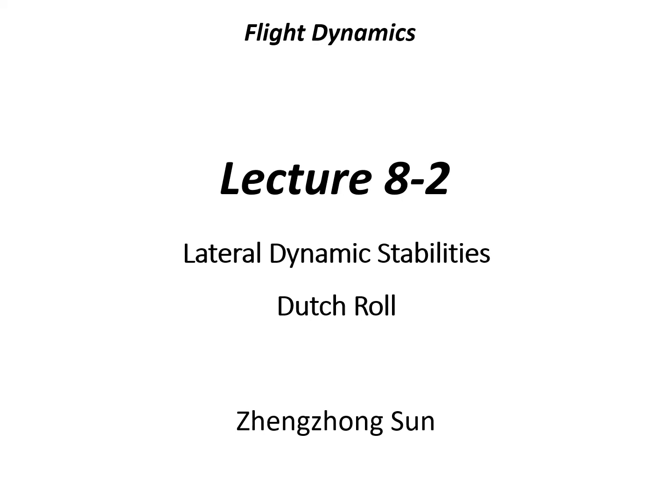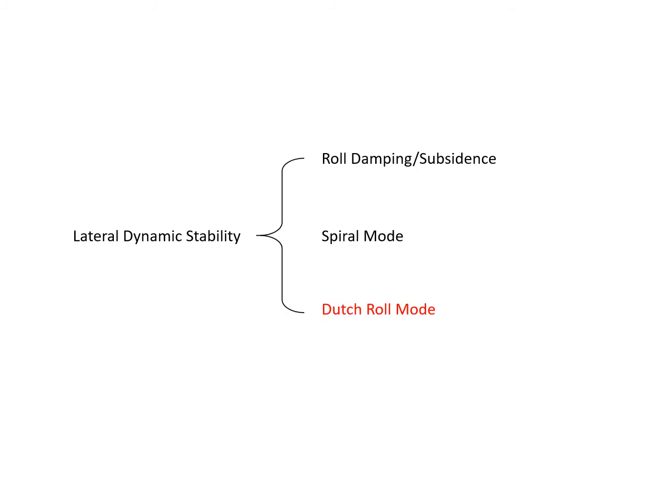In the second mini-lecture, we will look at the Dutch Roll mode, and this is the third lateral dynamic stability mode. We've previously studied the roll damping and spiral mode, and today we are going to look at the Dutch Roll mode.